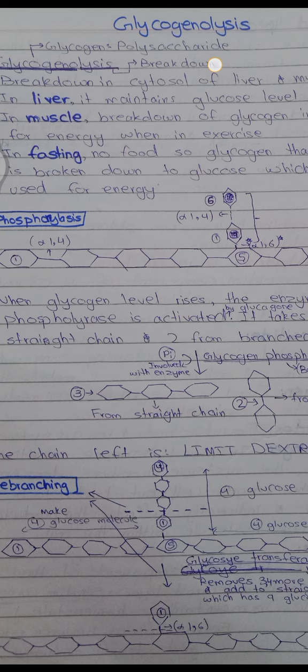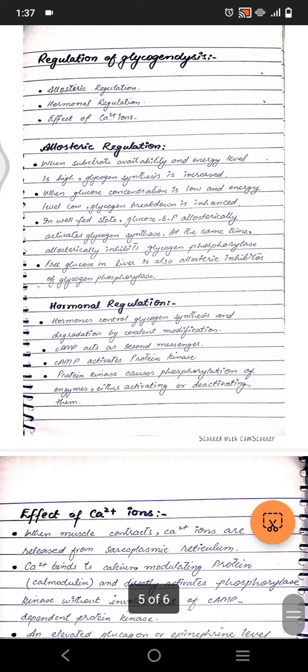Glucose-6-phosphatase is present only in liver and kidney, so muscles cannot convert glucose-6-phosphate to free glucose. The liver and kidney perform this conversion, and the resulting free glucose is released into the bloodstream, taken up by muscle, and then enters glycolysis to release energy. This is essentially glycogenolysis.